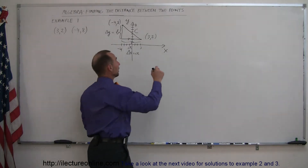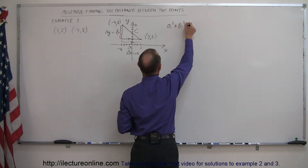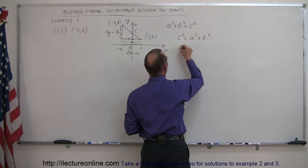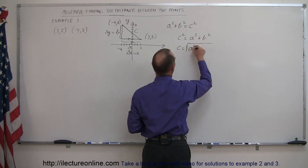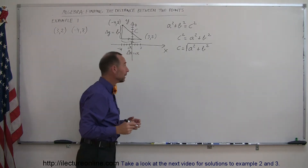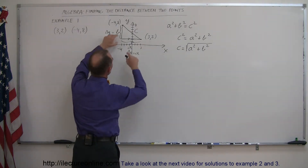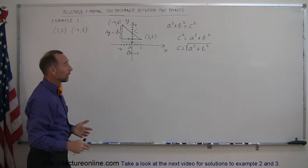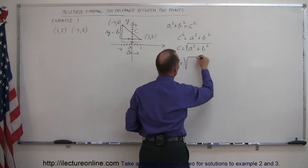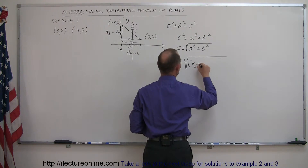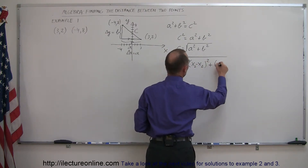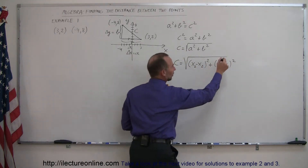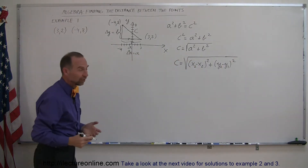From the Pythagorean Theorem, A squared plus B squared equals C squared, or C squared equals A squared plus B squared. Taking the square root of both sides, you get C equals the square root of A squared plus B squared. A is the difference between the two x-values, and B is the difference between the two y-values. Written algebraically, C equals the square root of (x2 minus x1) squared plus (y2 minus y1) squared. That is our distance formula.